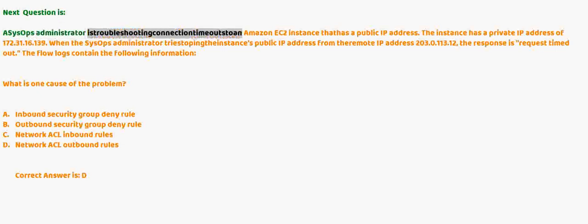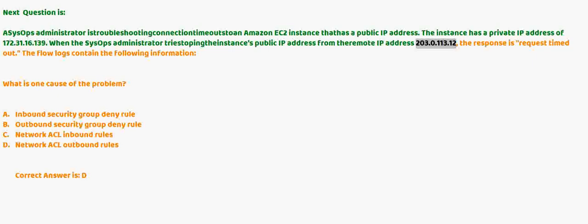Next question: A SysOps administrator is troubleshooting connection timeouts to an Amazon EC2 instance that has a public IP address. The instance has a private IP address of 172.31.16.139. When the SysOps administrator tries pinging the instance's public IP address from the remote IP address 203.0.113.12, the response is 'request timed out.' The flow logs contain the following information. What is one cause of the problem? A) Inbound security group deny rule. B) Outbound security group deny rule. C) Network ACL inbound rules. D) Network ACL outbound rules.